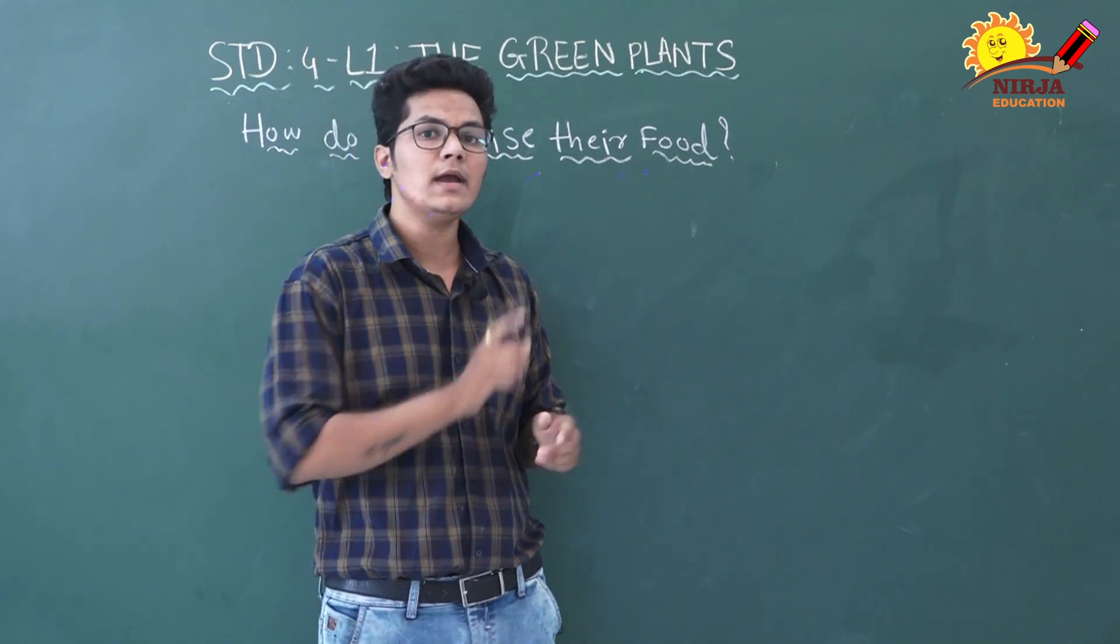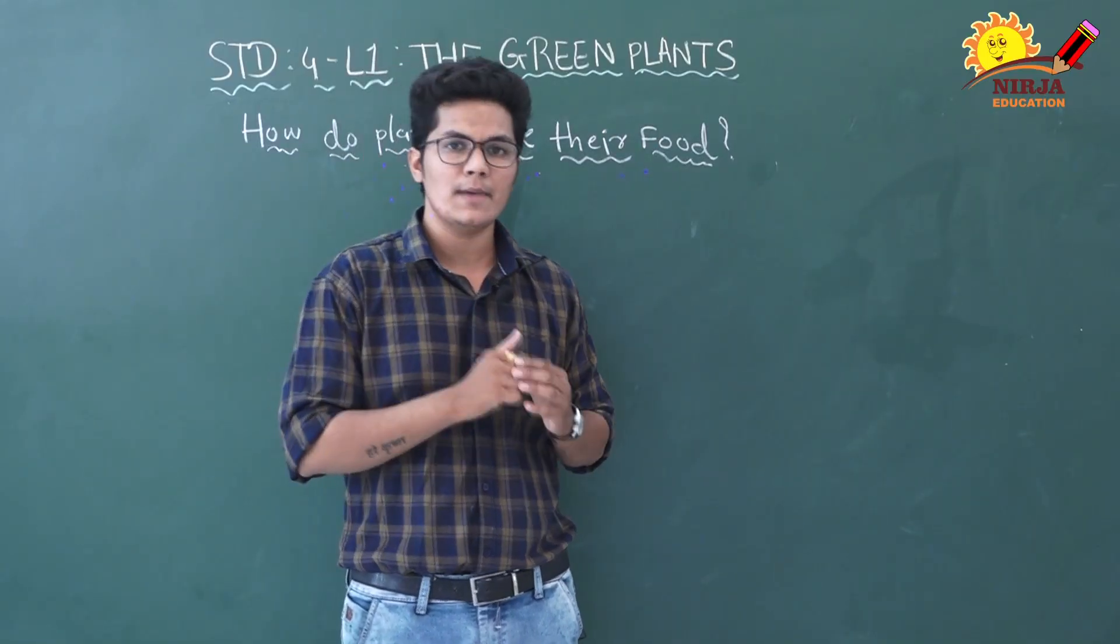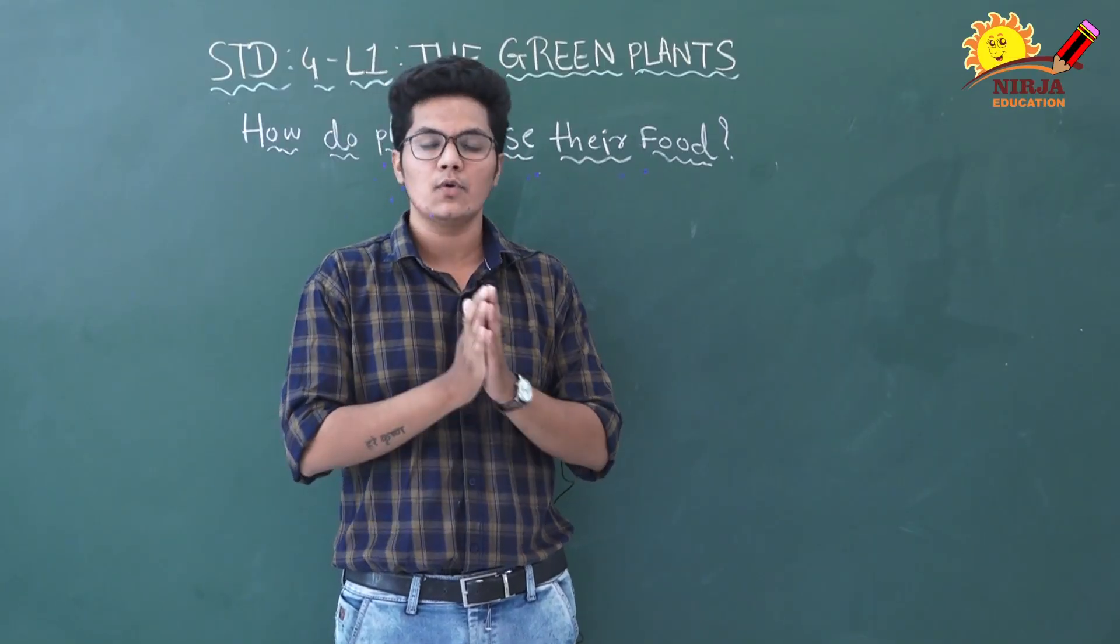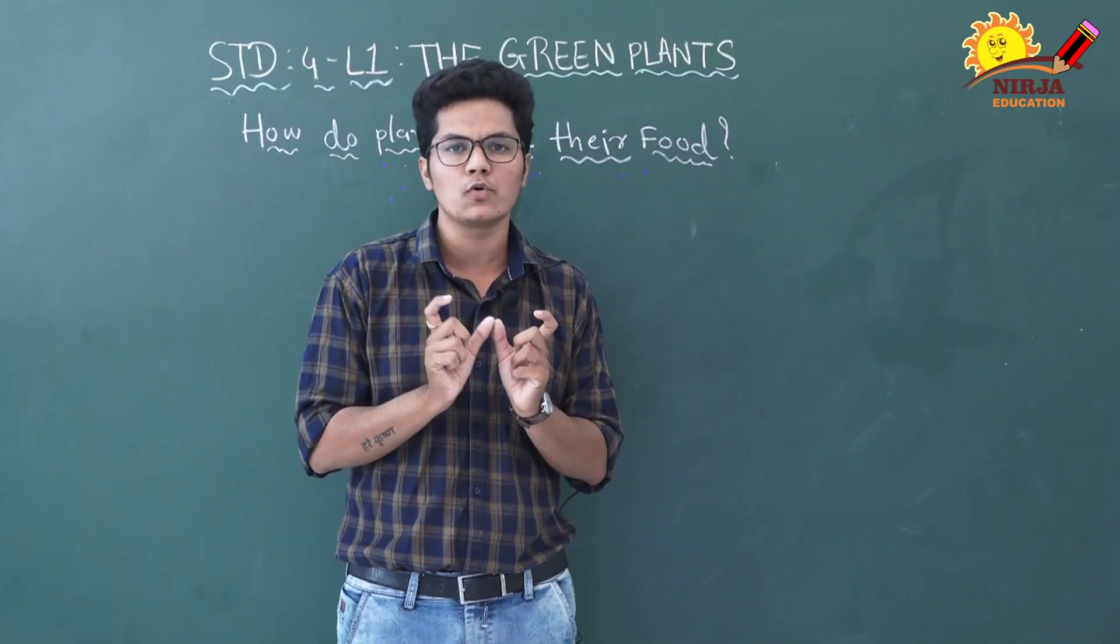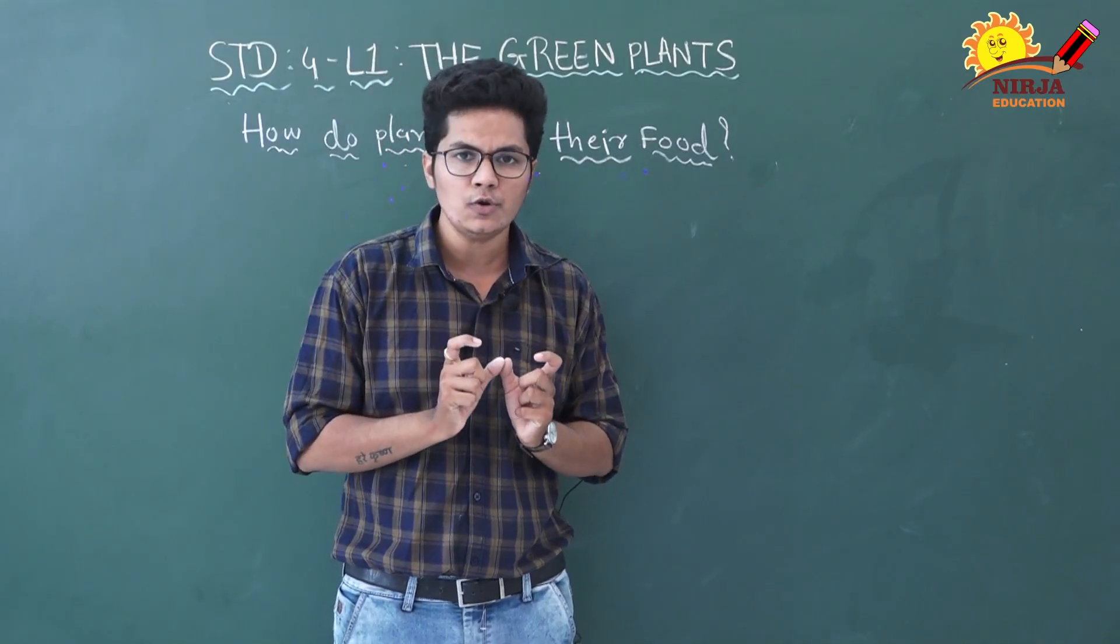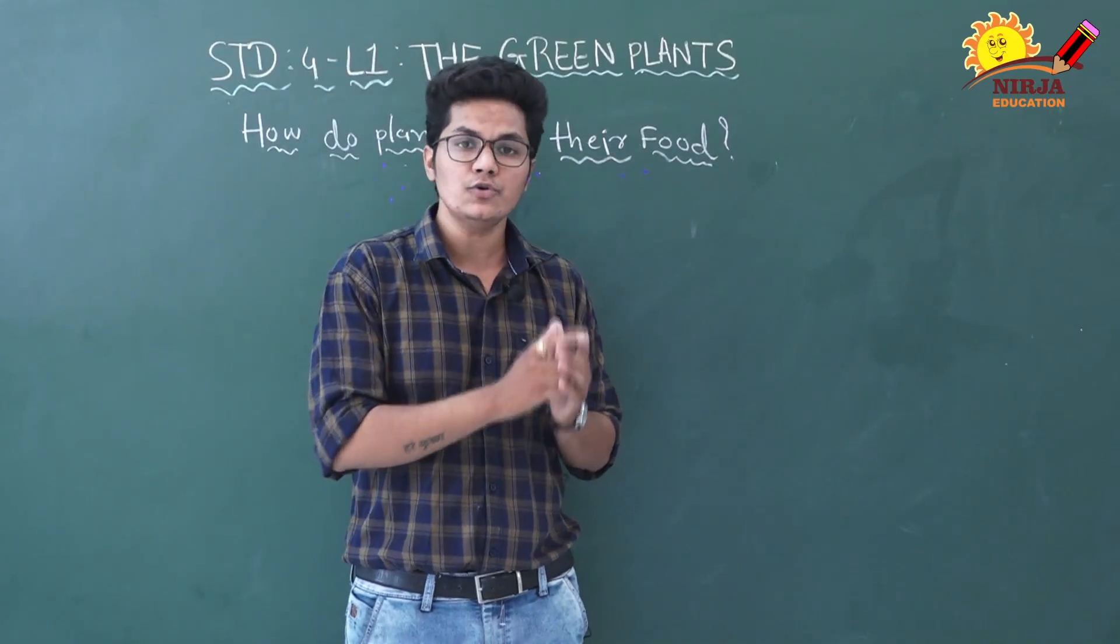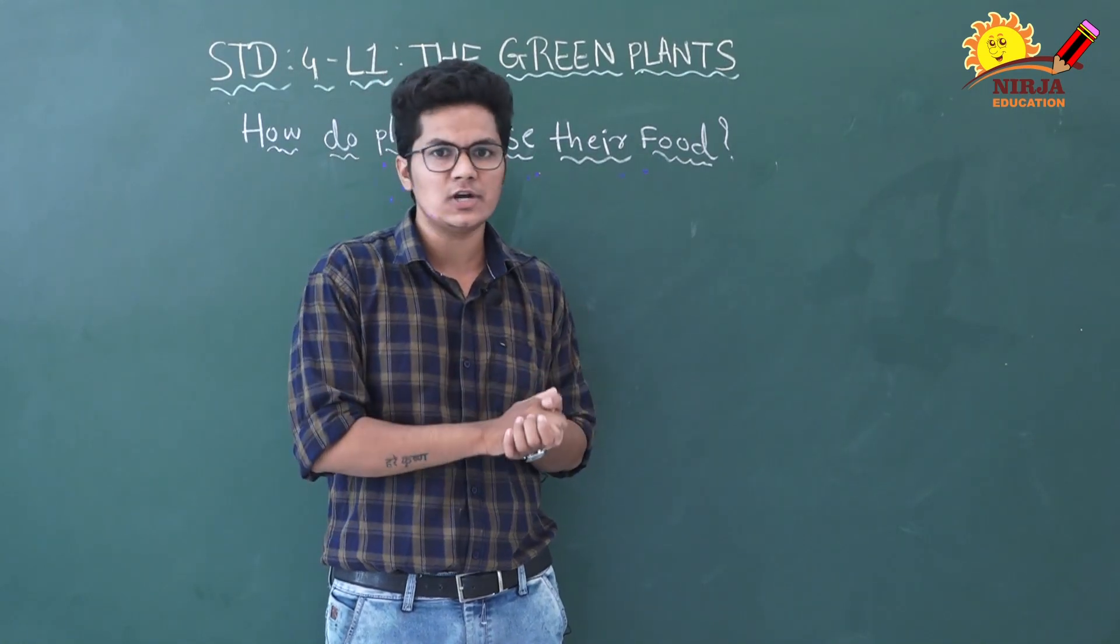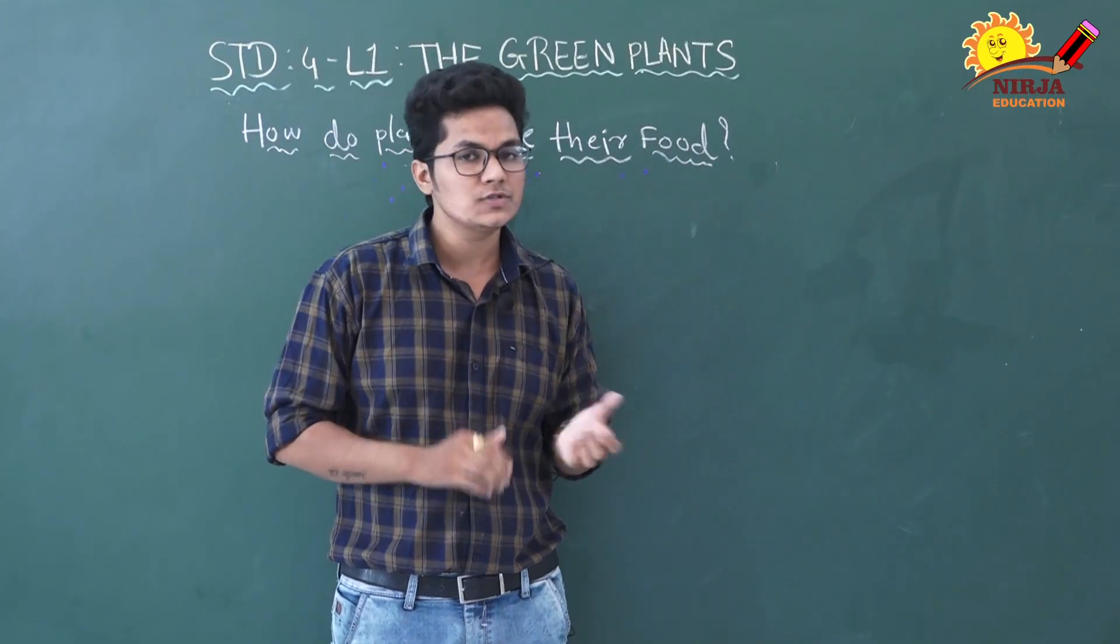The oxygen that is produced goes back into the air through the stomata. Glucose is a kind of sugar prepared by the plant. Plants cannot use up all the sugar that they make. Small units of glucose join together to make starch. Plants store starch in their leaves so that they can use it later.